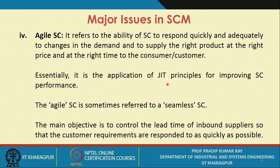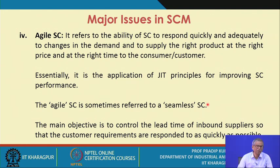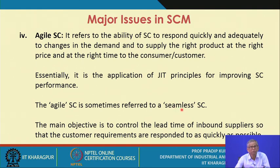Essentially, agility is an application of JIT principles for improving SC performance. The agile supply chain is sometimes referred to as a seamless supply chain — you create the supply chain in such a way that there is no disruption, meaning there is continuity in the supply. Maybe the supply rate has come down, but there are no disruptions or stock-out situations. That is why it is referred to as a seamless supply chain, which is one of the major goals of designing a supply chain.